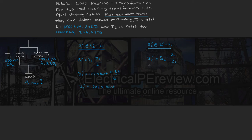Next, for S2': S2' equals 1000 kVA times (Z1/Z2), which is 6 divided by 4.83. This gives us S2' equals 1242.2 kVA.